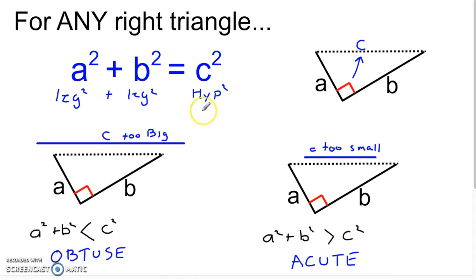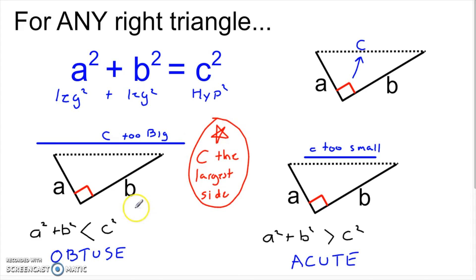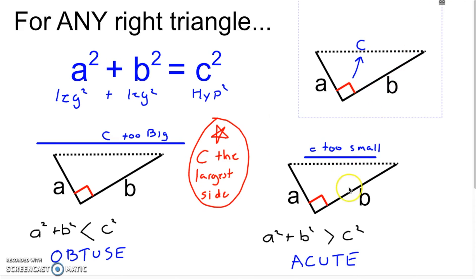So what we're seeing is that if we loosen the restriction on c in the Pythagorean theorem and just make c the largest side, we can actually use the Pythagorean theorem to figure out if we have an obtuse triangle — that happens anytime c is too big. And anytime c is too small — too short to be the hypotenuse — we would have an acute triangle. We can use the Pythagorean theorem not just to find a missing side, but to figure out what kind of triangle we're looking at.